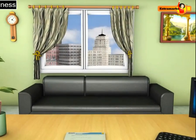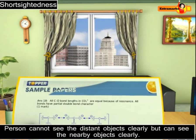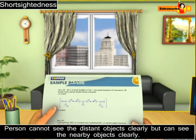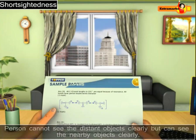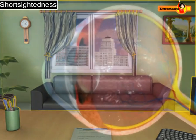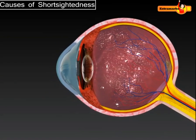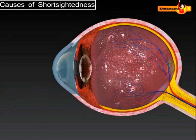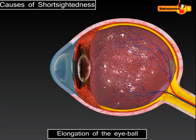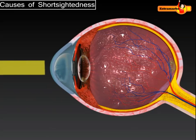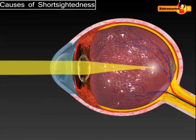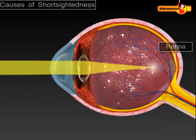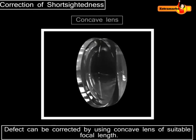Short-sightedness is a type of eye defect in which a person sees near objects clearly while distant objects appear blurred. It is also called myopia. The person suffering from short-sightedness has either a thicker eye lens or an elongated eyeball, thus a short-sighted person cannot focus clearly on an object farther away than the far point.